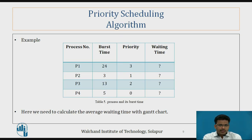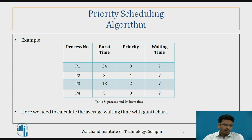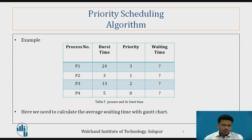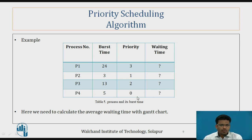Now let's see the priority scheduling algorithm. Like other scheduling algorithms, we have the process number and burst time, but here we have added one more field — priority. Each process has its own priority, and based on this priority the CPU is going to be allocated. P1 has priority 3, P2 has priority 1, P3 has priority 2, and P4 has priority 0. The smallest number has the highest priority.